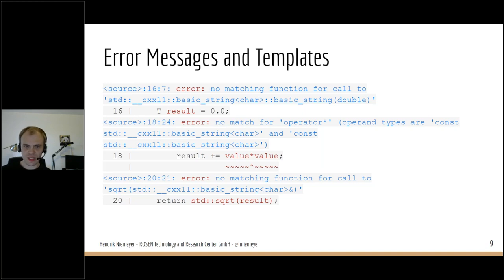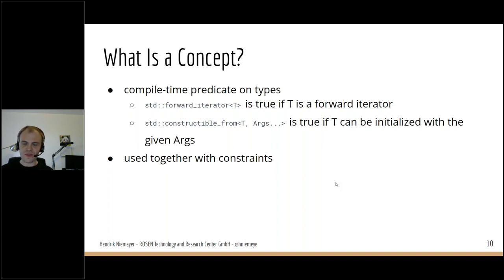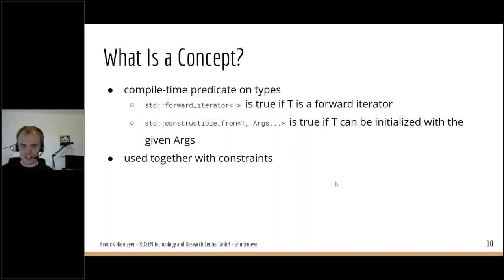So what is a concept? A concept is a compile-time predicate on types — a function which takes a type as a template parameter and maps it to either true or false. Two examples from the standard library: std::forward_iterator<T> evaluates to true if T is a forward iterator and false otherwise. And std::constructible_from<T, Args...> evaluates to true if T can be initialized with the given arguments. Usually these concepts are used together with constraints.